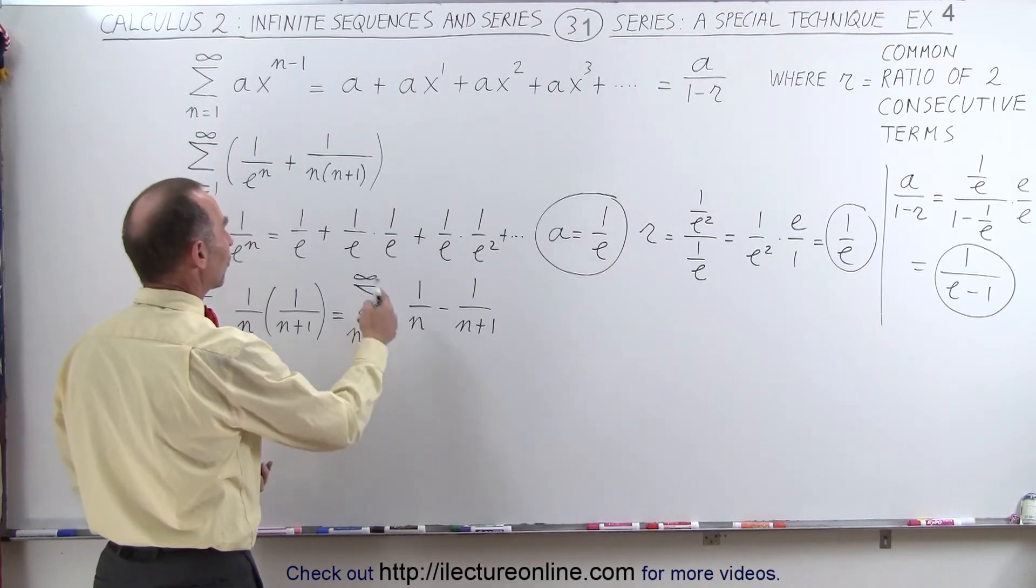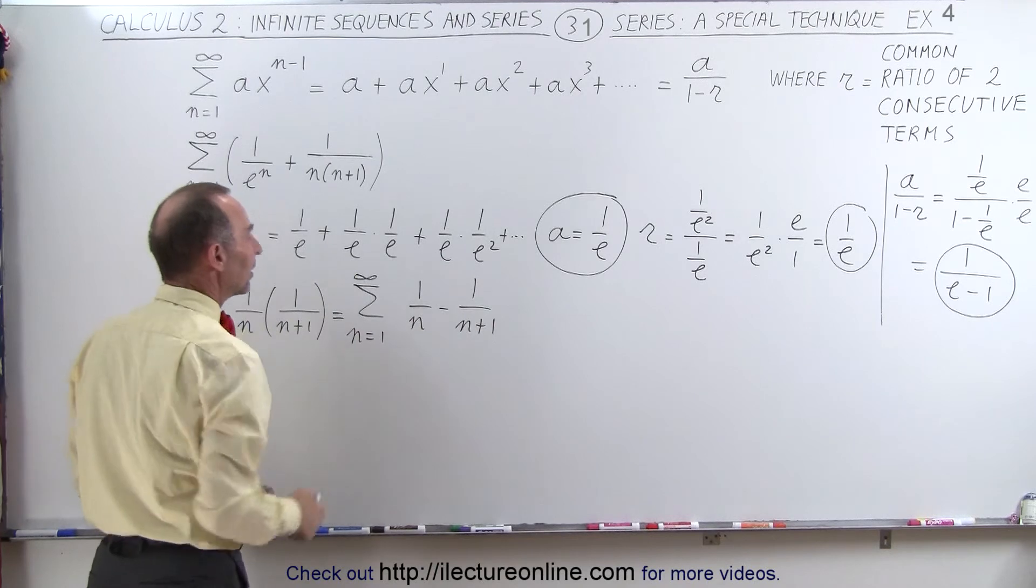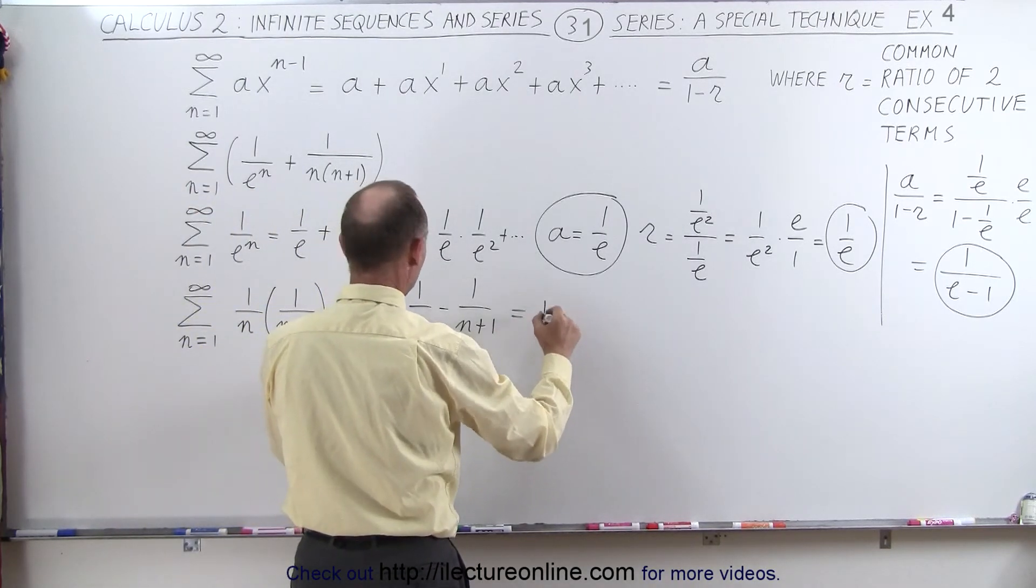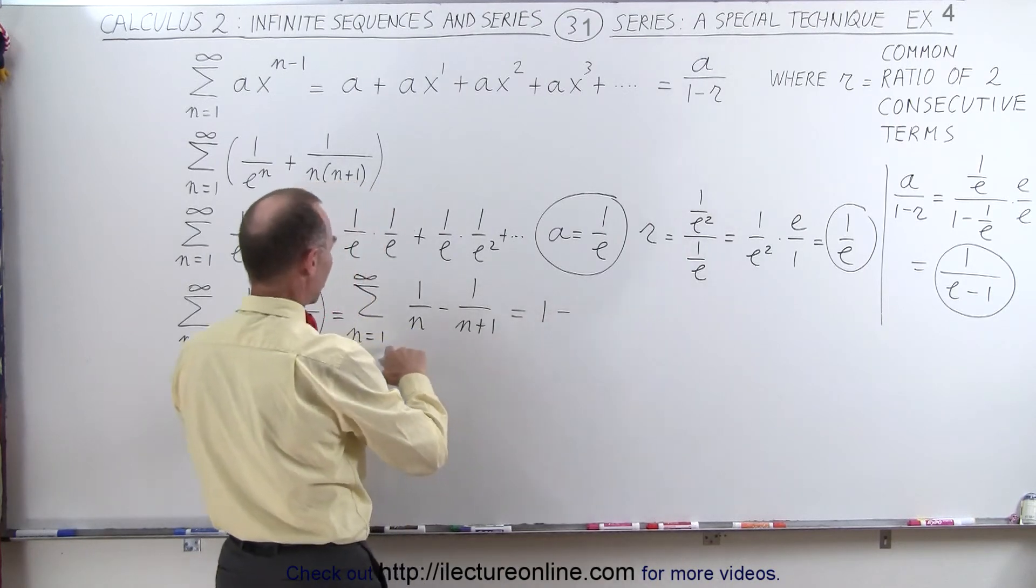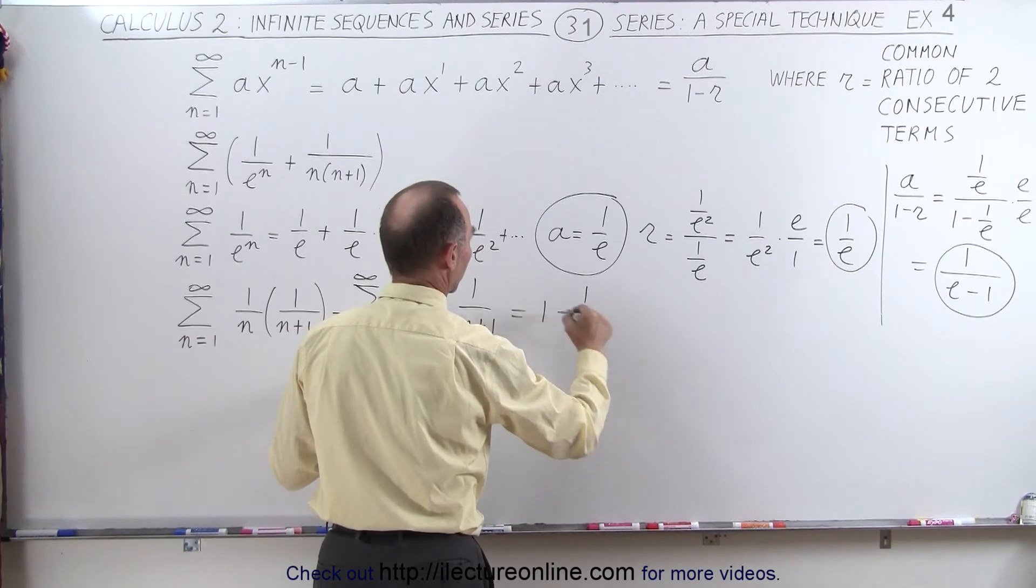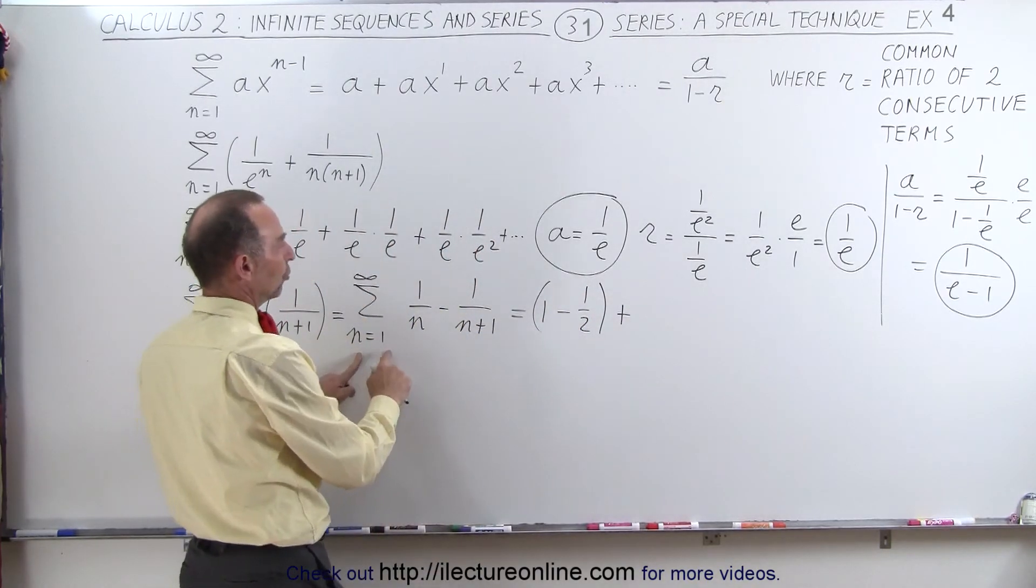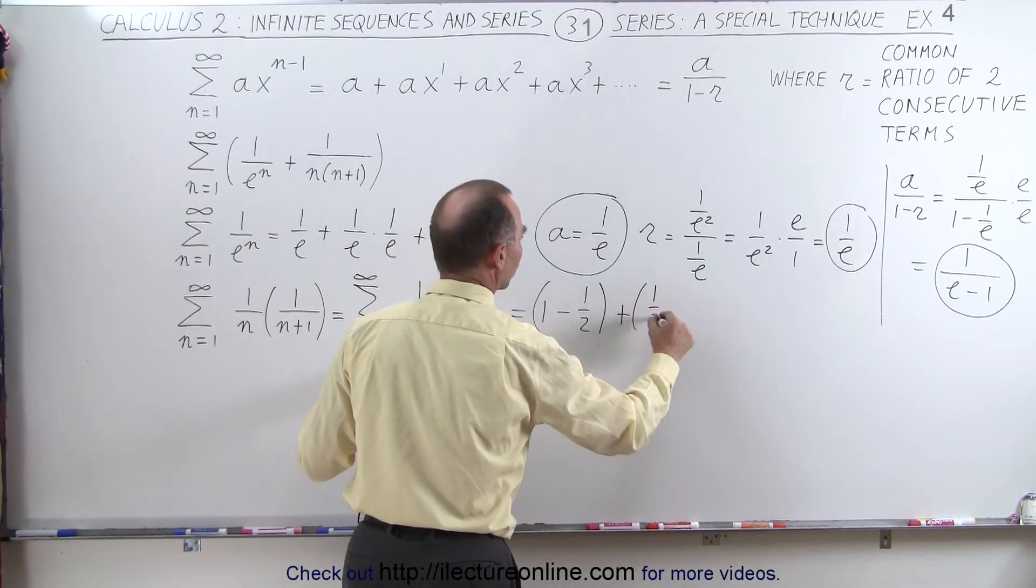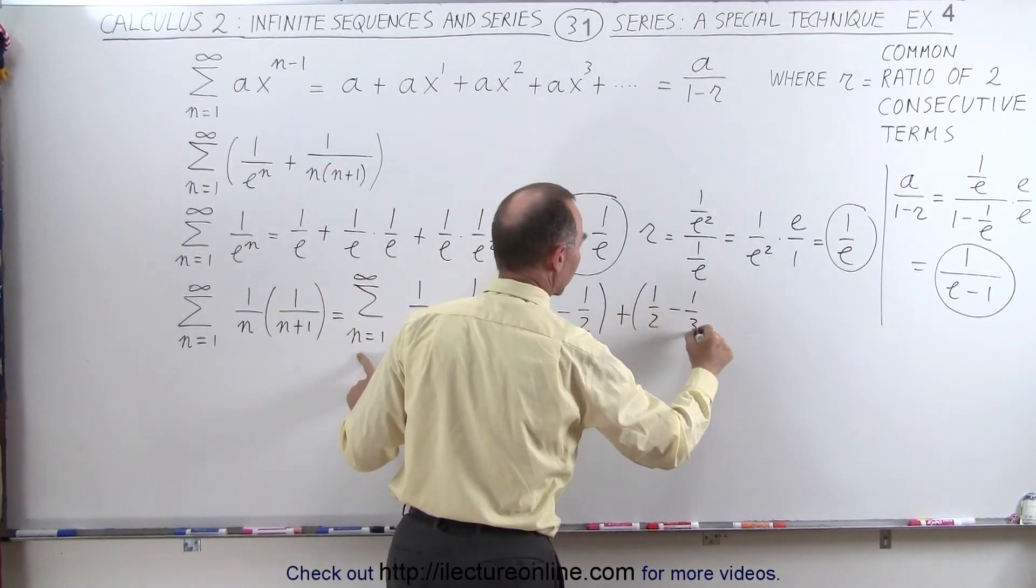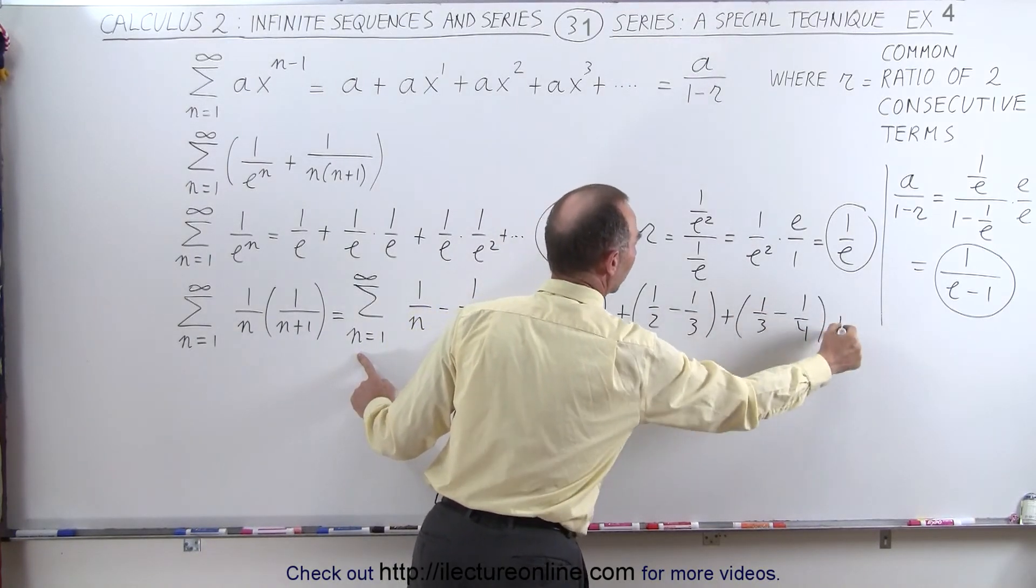Now the infinite series of 1 over n as n goes from 1 to infinity can be written as follows. This can be written as 1 minus 1 over 2, that would be the first term, plus when we let n equals 2, we get 1 over 2 minus 1 over 3, plus 1 over 3 minus 1 over 4, and so forth.